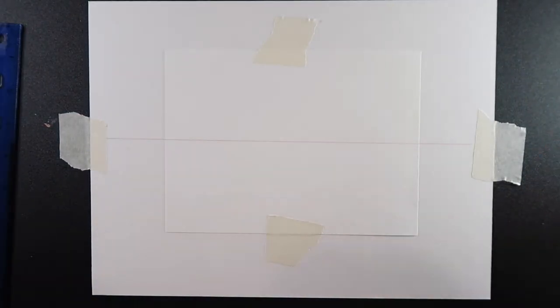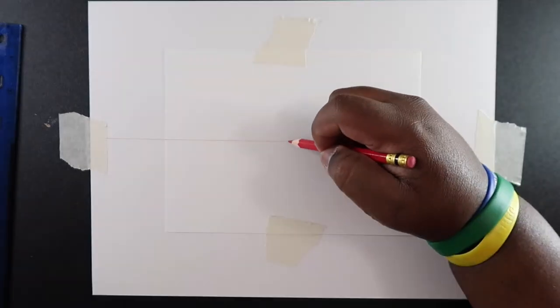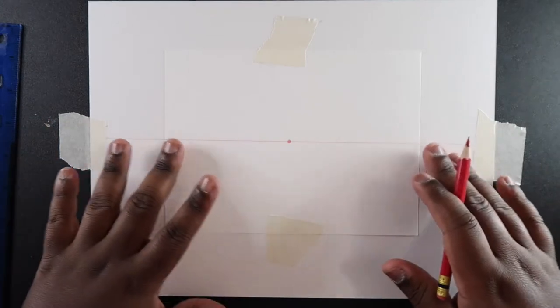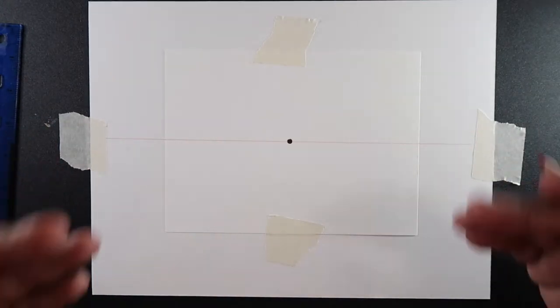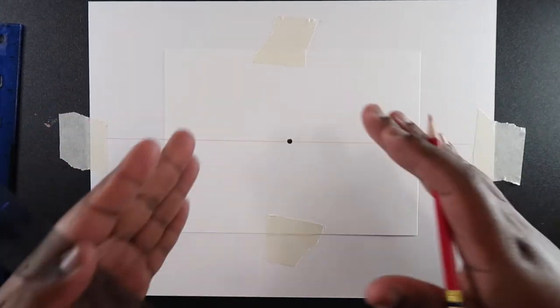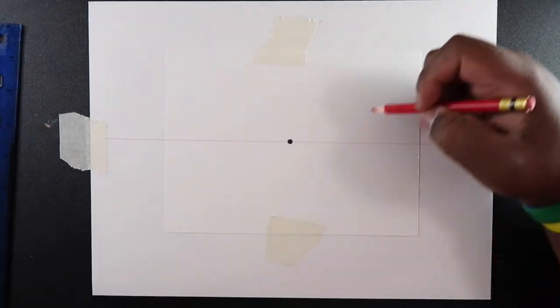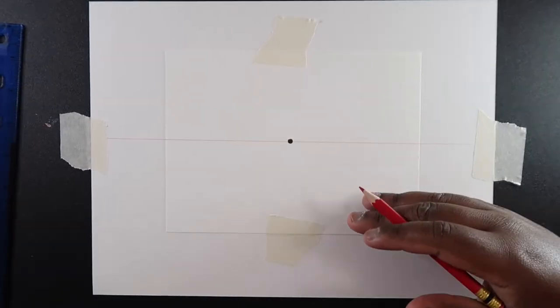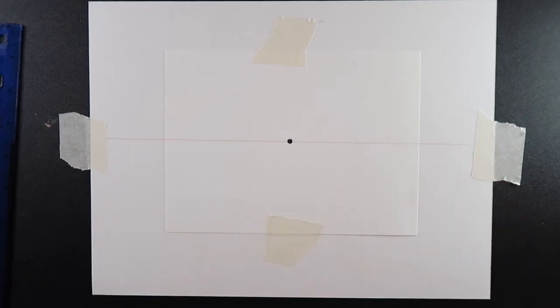And then I'm going to pick a point for my vanishing point, and I'm going to choose the middle, like right over here. Of course, you can pick anywhere on the line, it just has to be on the line. And next up, we're going to draw a shape anywhere on the piece of paper. So if we draw a shape right here above the horizon line, we're going to be looking up at it. And if we draw a shape down at the bottom, we're going to be looking down on it. So I'm just going to do both just so you can get a better understanding.